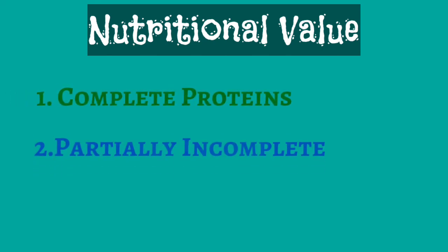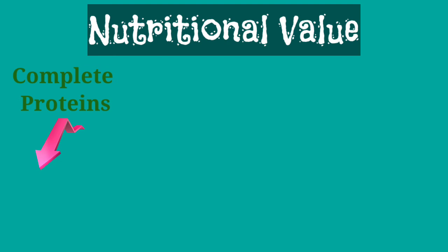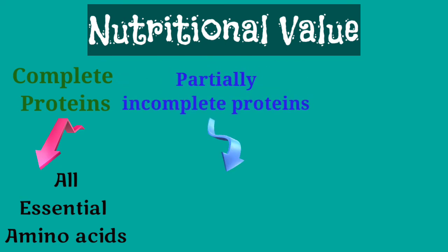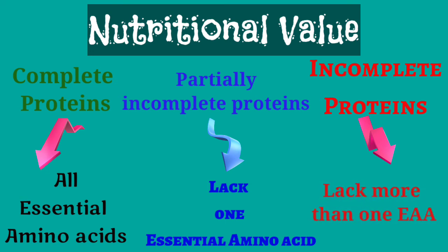Classification based on nutritional value: proteins are classified into three categories — complete proteins, partially incomplete proteins, and incomplete or poor proteins. Any protein containing all essential amino acids is a complete protein — for example, casein and albumin. Proteins lacking one essential amino acid are partially incomplete — for example, proteins from pulses lack methionine and proteins from cereals are deficient in lysine. Proteins lacking more than one essential amino acid are poor or incomplete proteins — examples are zein of corn.